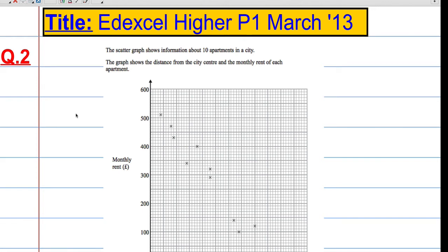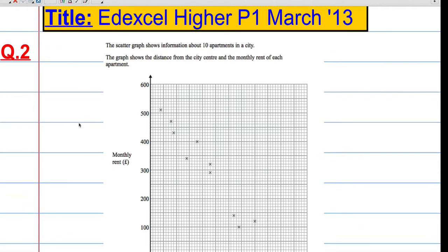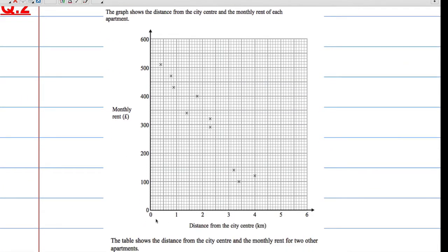Okay, so question two. The scatter graph shows information about 10 apartments in a city. The graph shows the distance from the city center and the monthly rent of each apartment. Here we've got our distance from the city center and that's the monthly rent. Obviously the rent depends on the distance from the city center because that's on the x-axis.